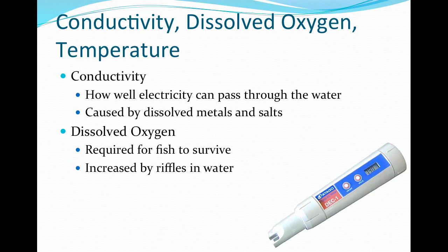Dissolved oxygen: aquatic organisms are dependent on oxygen dissolved in the water. Typical dissolved oxygen levels in water are 2 to 14 milligrams per liter and fluctuate over the course of a day due to photosynthesis occurring in the stream. Reductions in dissolved oxygen occur due to increases in temperature and increases in organic matter decomposition caused by algal blooms.